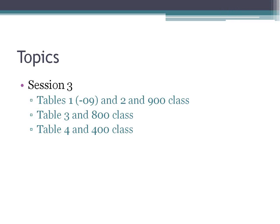Here's what we're going to cover today. We're talking about the last bit of Table 1 — we started that last week — and we're going to talk about the 09 subdivision and how it's used with Table 2 and the 900 class. Then we'll talk about Table 3, which is only used with the 800 class, and Table 4, which is only used with the 400 class.